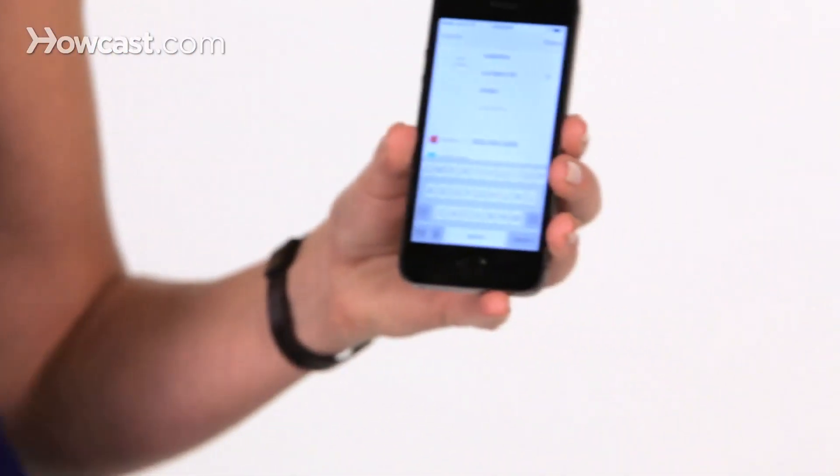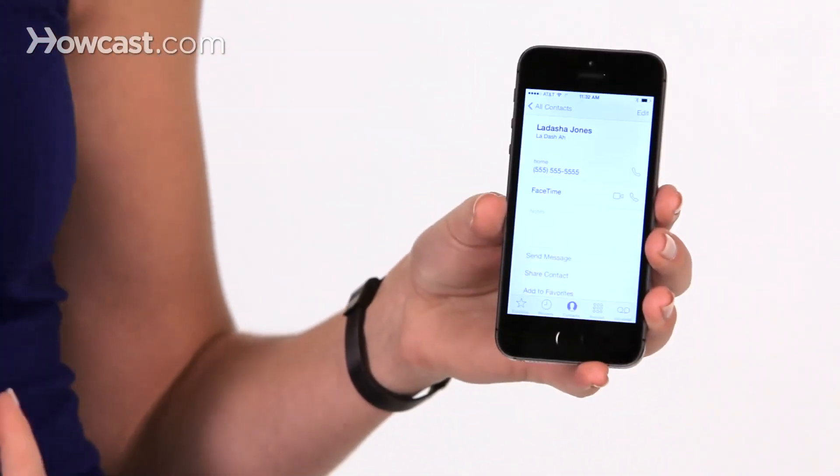Once that's done, I tap done. And now, when I ask Siri how to say my sister's name, she'll say it correctly.